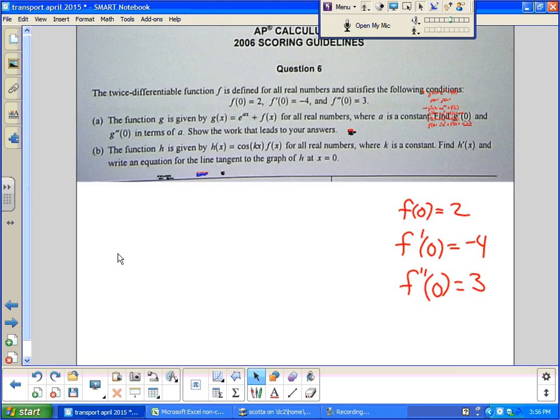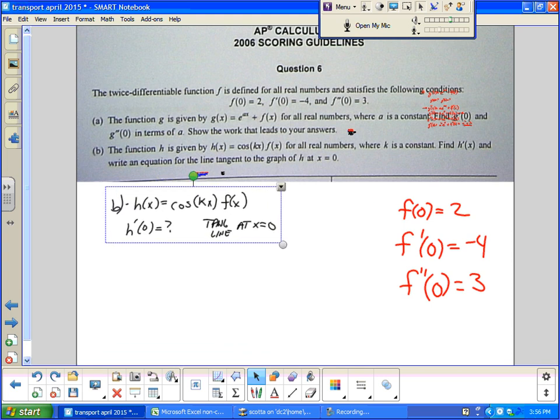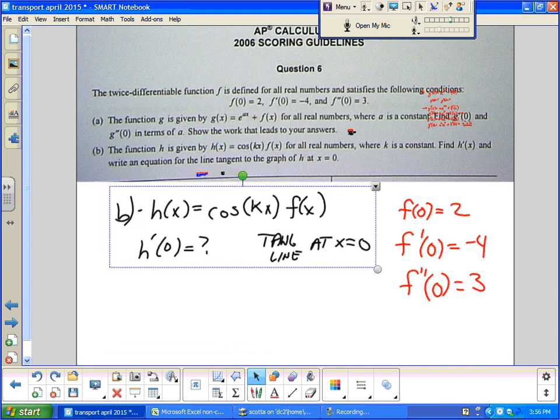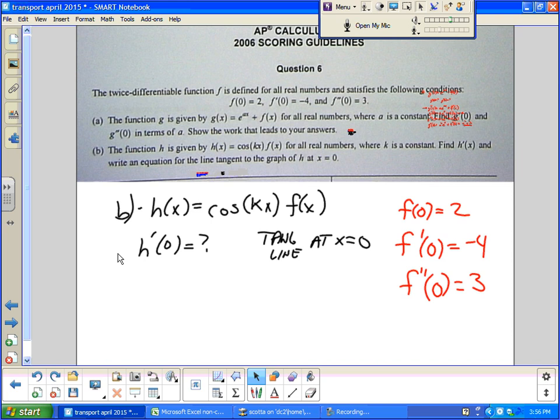Function h of x is given by cosine kx times f of x, where k is a constant. Find h prime of x and write an equation for the line tangent to the graph. Alright. So we should be able to look at this and immediately see this is f times g, or g times f. Point is this is a product rule situation. Alright.